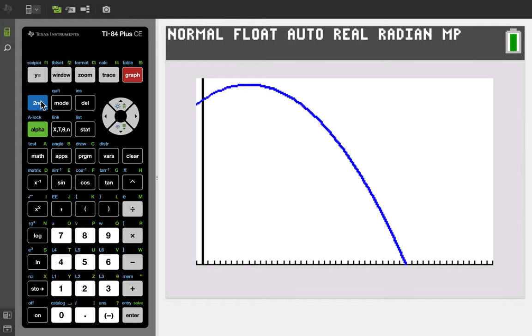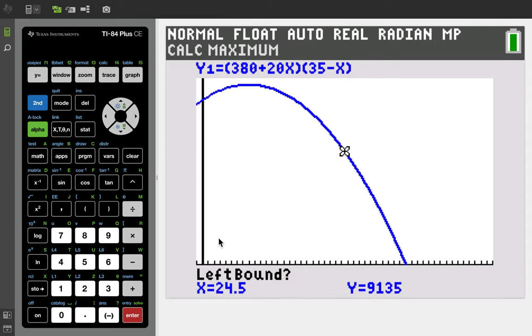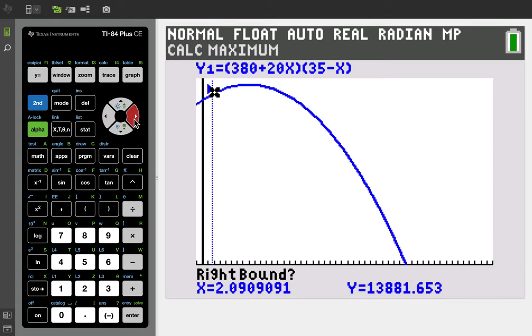And so what we did in class was second calc. That's how you find features on a graph, analyze the graph. And then we go to maximum, hit enter. And it says, go to the left of where you think the maximum is. So go back, somewhere on the left of the maximum, hit enter. And then arrow to the right, somewhere on the right. Here's the maximum left bound, right bound is there. I don't want to guess. And there you go.